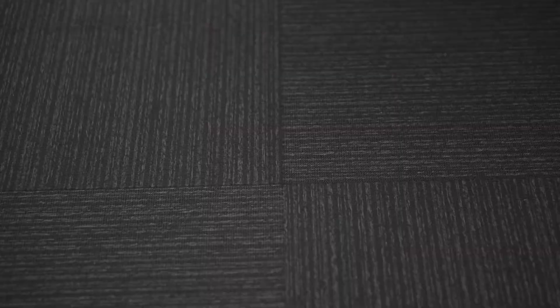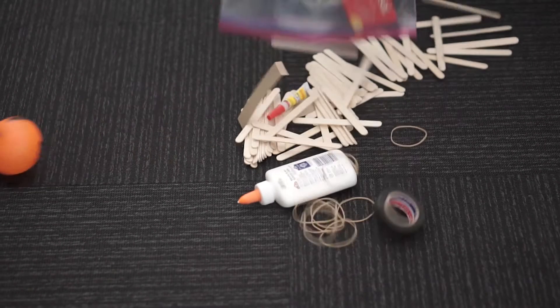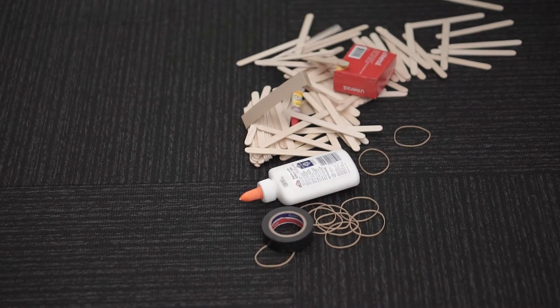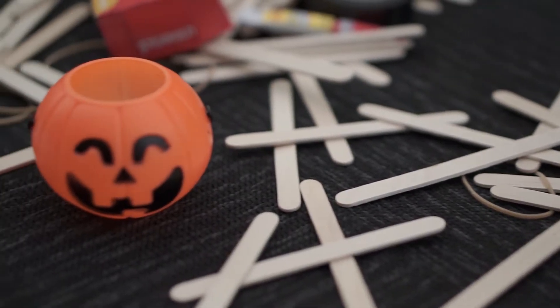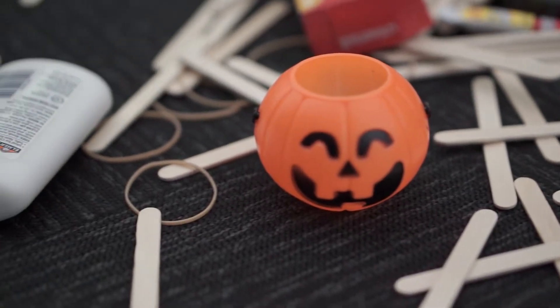So we give each of the teams a kit of building materials in one ziplock bag. I think this year was 75 popsicle sticks, some Elmer glue, some super glue, some electrical tape, some paper clips.